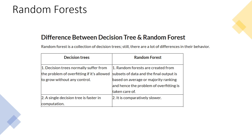An important difference between decision trees and random forests: decision trees suffer from overfitting, especially if allowed to grow without limits. Random forests do not overfit because you have more than one tree — they make decision trees more robust. The trade-off is that a single decision tree is faster in computation, while random forests are comparatively slower because more than one tree is used.